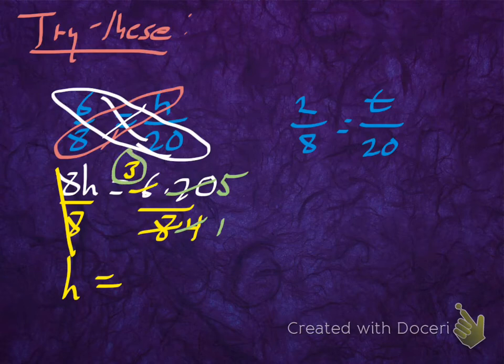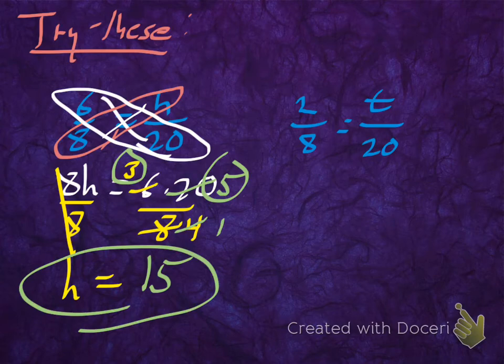So on the top, you get a 3 and a 5. 3 times 5 is 15, divided by 1 is 15, and that's the answer. So 6 over 8 is equal to 15 over 20, and that makes sense because both of those ratios are going to reduce to 3 fourths.